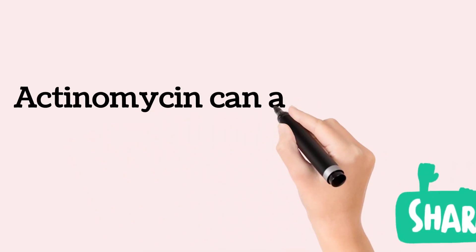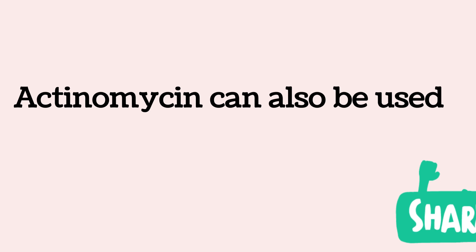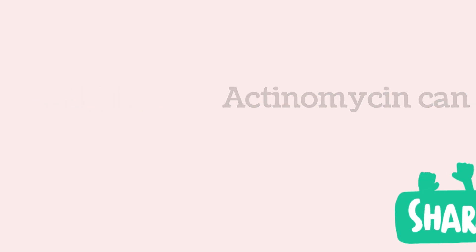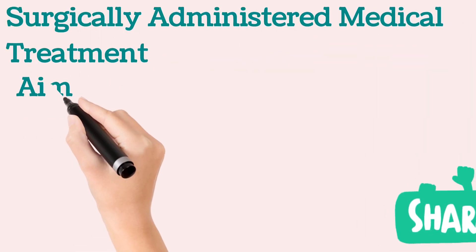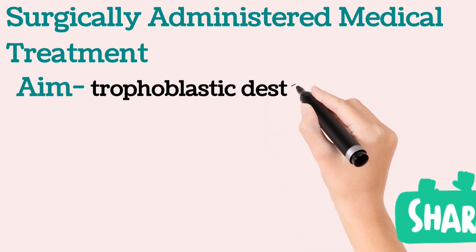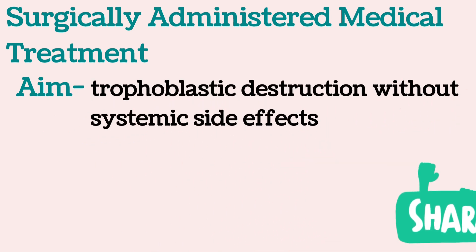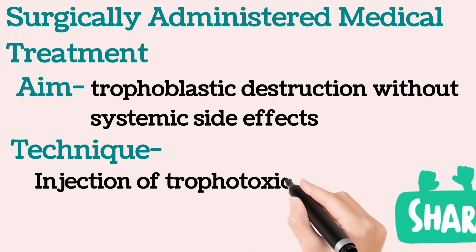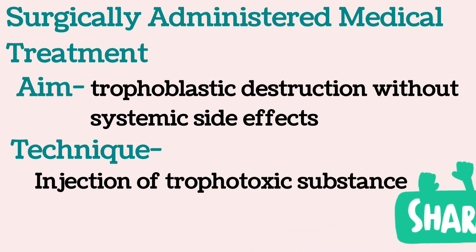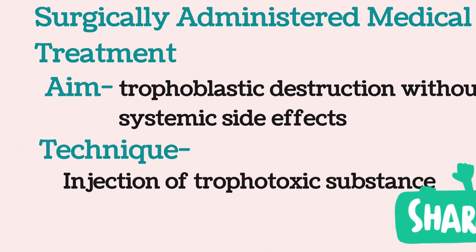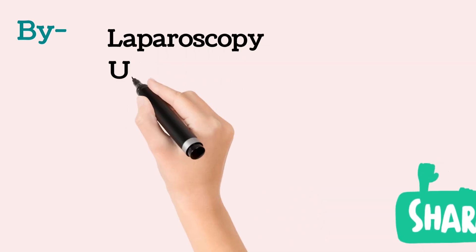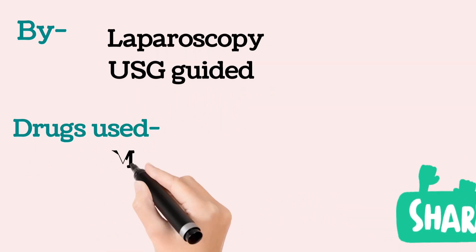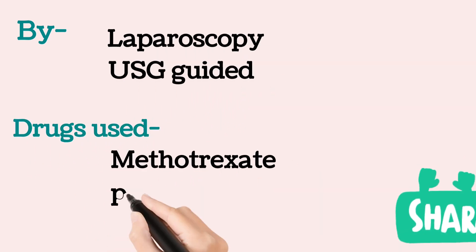Other than methotrexate, actinomycin D can also be used. Surgically administered medical treatment aims at trophoblastic destruction without systemic side effects by injecting a trophotoxic substance into the ectopic pregnancy sac or into the affected tube via laparoscopy or ultrasound guidance. Drugs used include methotrexate and potassium chloride.